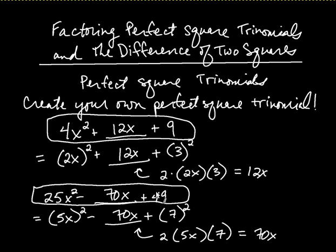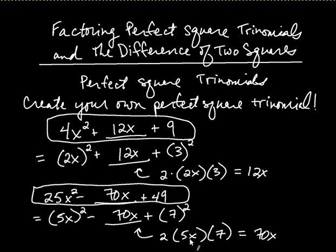These are both what we call perfect square trinomials. The reason we played this little game is it's crucial that you identify when you have a perfect square trinomial. You have to have perfect squares on the ends, and the middle always has to be twice whatever it was that you were squaring, multiplied together. The middle was twice 2x times 3, and the middle down here was twice 5x times 7. Now let's take advantage of that to factor a perfect square trinomial.